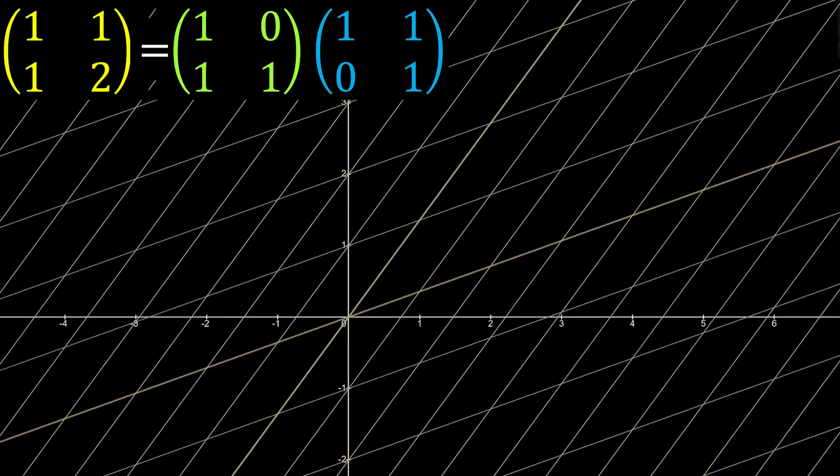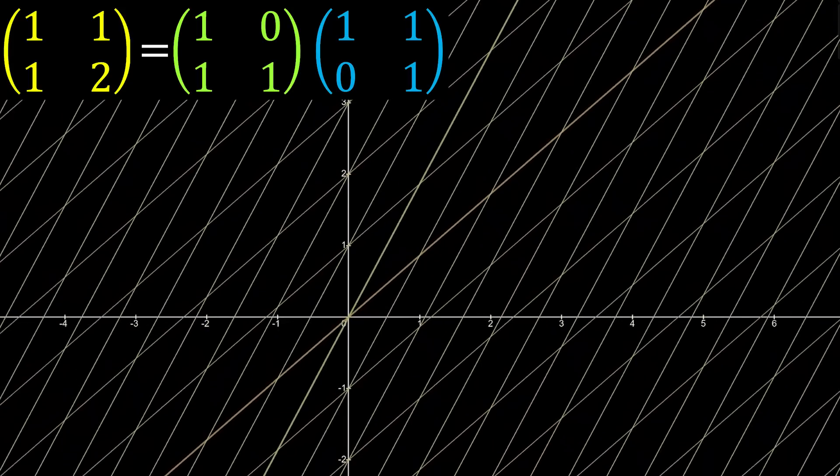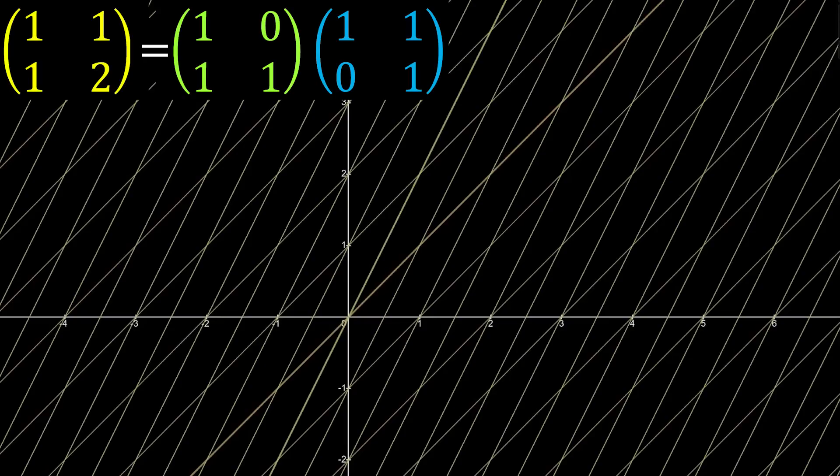And so the Gaussian elimination procedure can be just thought of as this decomposition into these simpler transformations that are easier to track, easier to interpret, as it's only moving things vertically or horizontally.